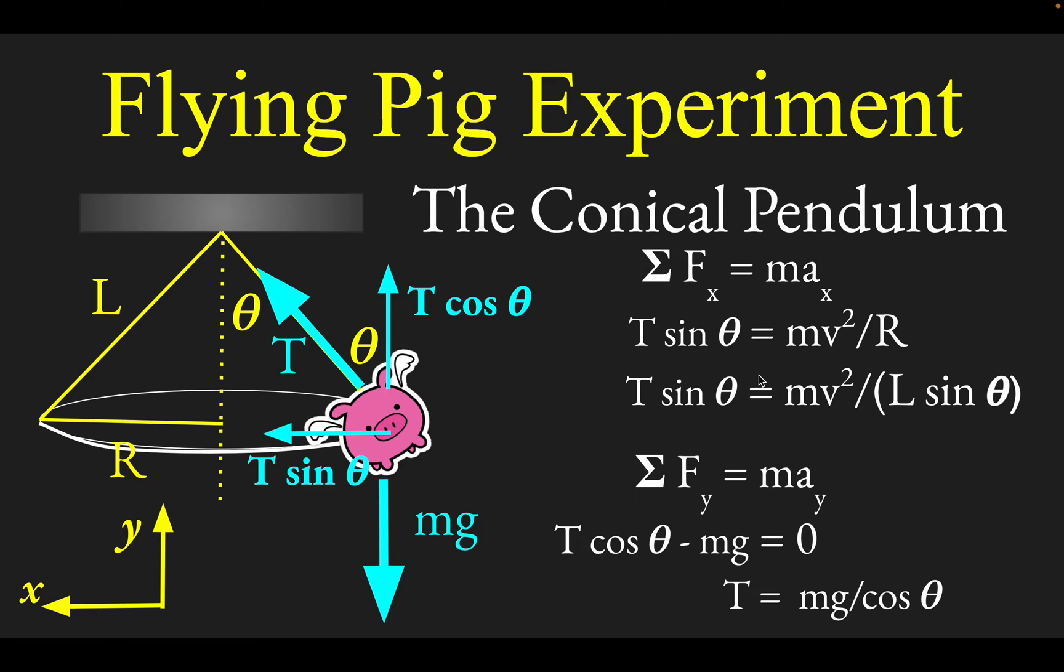We have a couple of equations for a couple of unknowns. You have this equation coming from horizontal information and this equation coming from vertical information. Let's use them together to eliminate the unknown tension.